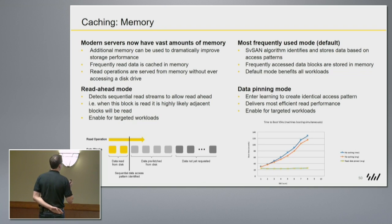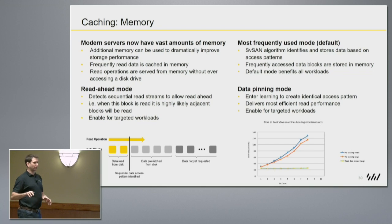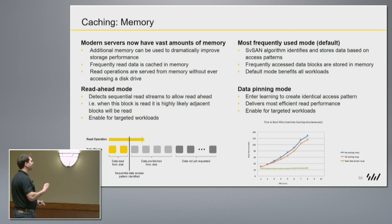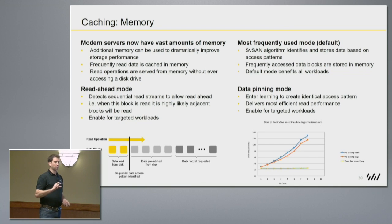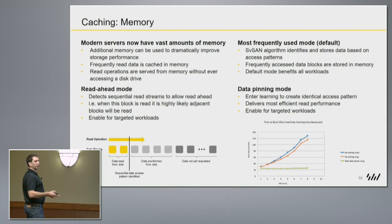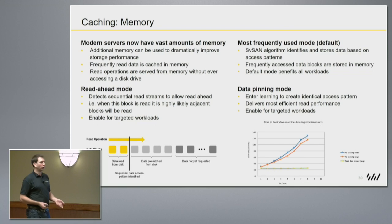We also have memory caching. Later on I actually have some customer data on what we've done — we've gone out and looked at customers, got their real-life workloads, and I'm going to present that to you. It's amazing how little memory can benefit these customers: over 70 percent of their daily reads. Servers have a lot of memory in them now, so why not use a small subset of that to benefit our workloads?